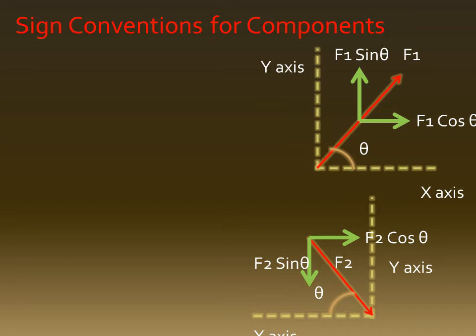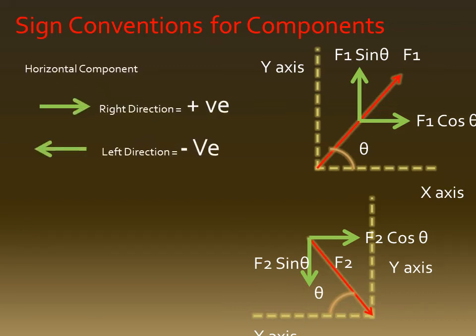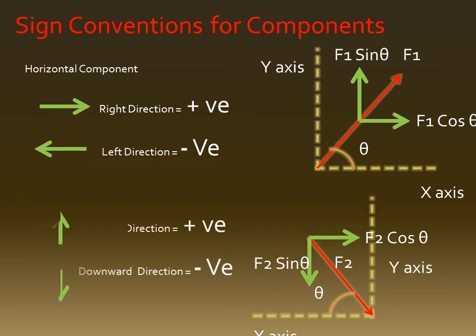Sign conventions: F1 sin θ is in the upward direction, and F2 sin θ is in the downward direction. F1 cos θ and F2 cos θ are both in the right direction. For horizontal components: right direction is positive, left direction is negative. For vertical components: upward direction is positive, downward direction is negative. These sign conventions are applied while solving problems.